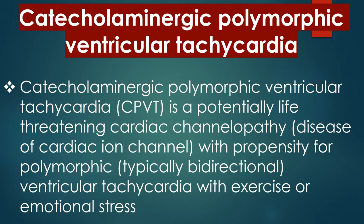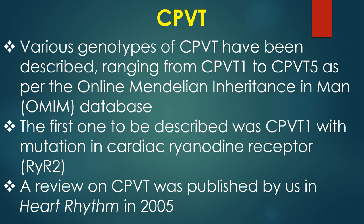Catecholaminergic polymorphic ventricular tachycardia (CPVT) is a potentially life-threatening cardiac channelopathy with propensity for polymorphic, typically bidirectional ventricular tachycardia with exercise or emotional stress. Various genotypes of CPVT have been described, ranging from CPVT1 to CPVT5, as per the Online Mendelian Inheritance in Man database.